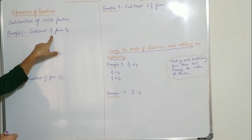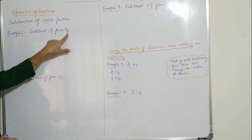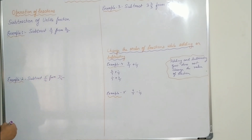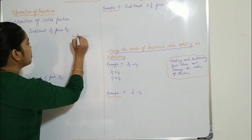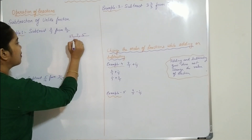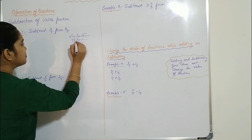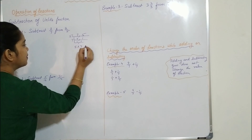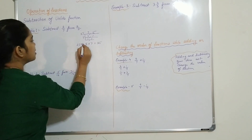You can see that the denominators are different, that is 7 and 5. So what we will do — we have to find the LCM of the two numbers. If you find the LCM of 5 and 7, it will be 5 into 7, that is 35. So LCM is 35.